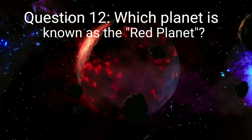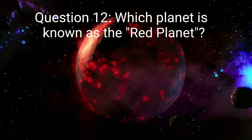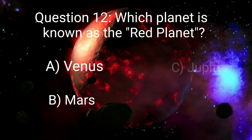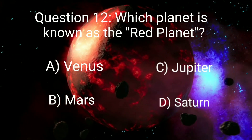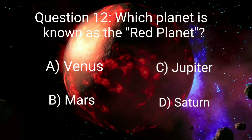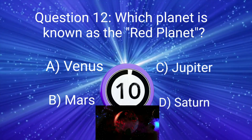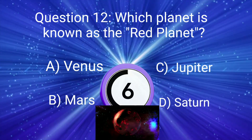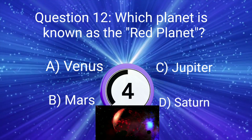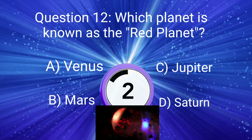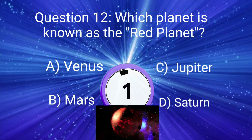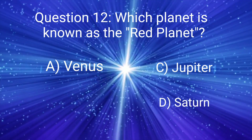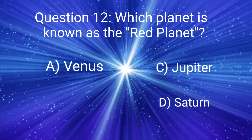Question 12. Which planet is known as the Red Planet? A. Venus, B. Mars, C. Jupiter, D. Saturn. You have only 10 seconds to think. Your time is starting now. Okay, friends, your time is up. The right answer is B. Mars.